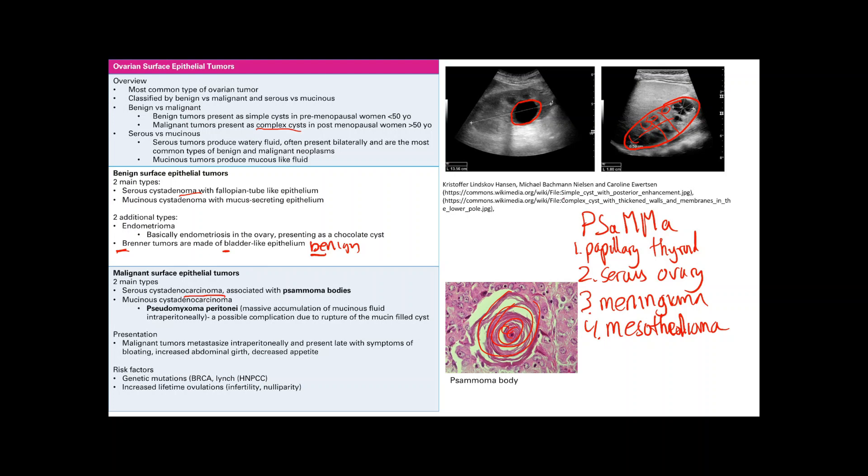Mucinous cystadenocarcinomas do not have psammoma bodies. These produce a bunch of mucus. Then what happens is the possible complication is pseudomyxoma peritonei. It's a big long word for massive accumulation of mucinous fluid intraperitoneally.